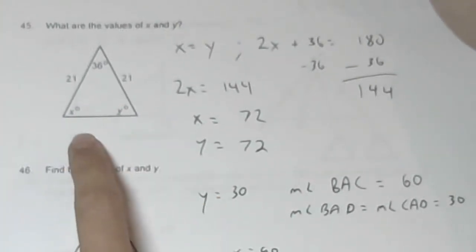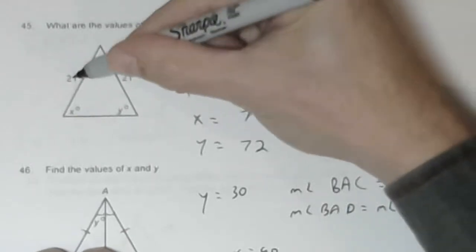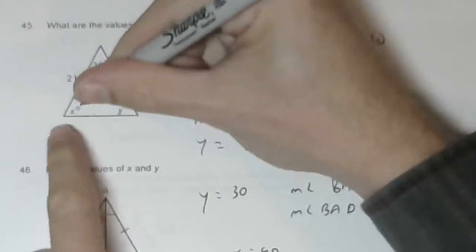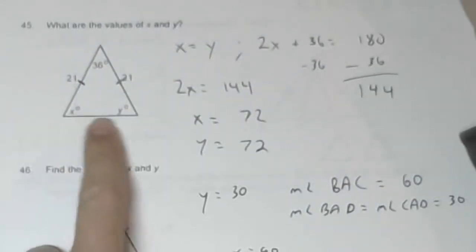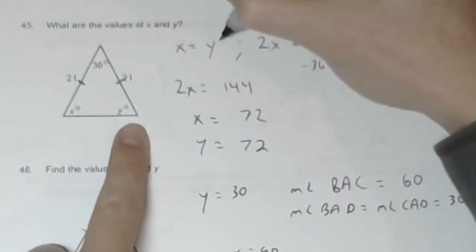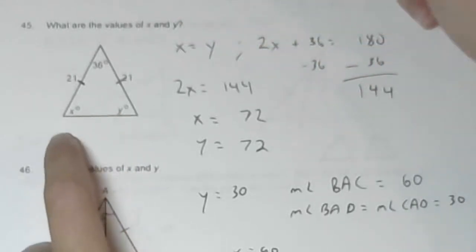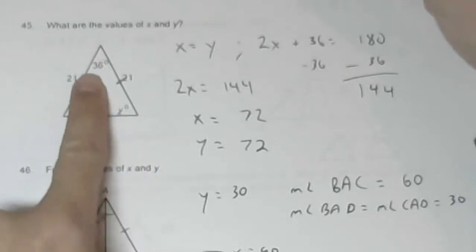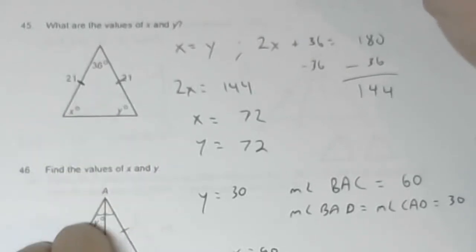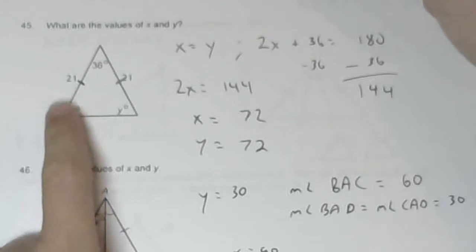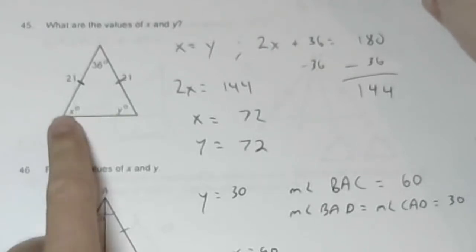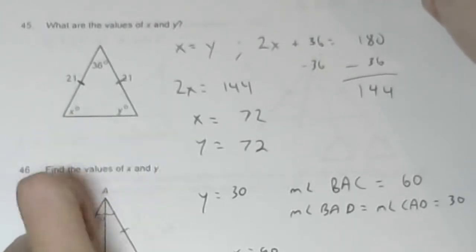Problem 45, I want the values for X and Y. If both these sides are 21, these are equal, then X equals Y. If X equals Y, I can substitute Y in for X or X in for Y. So normally it would be X plus Y plus 36 equals 180, but since X equals Y, 2X plus 36 equals 180. Subtract the 36, 2X equals 144. X equals 72, Y equals 72.